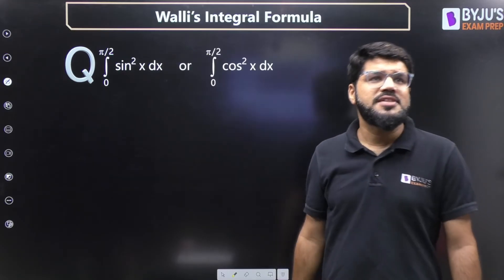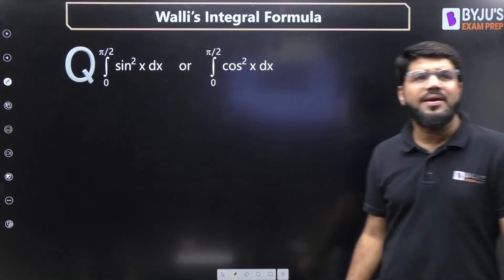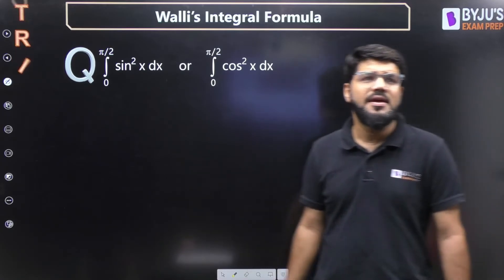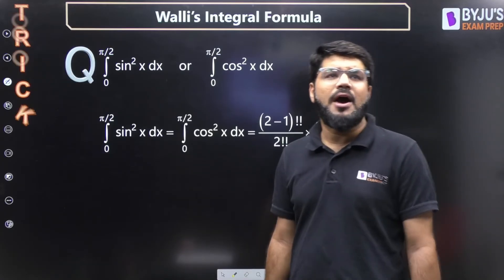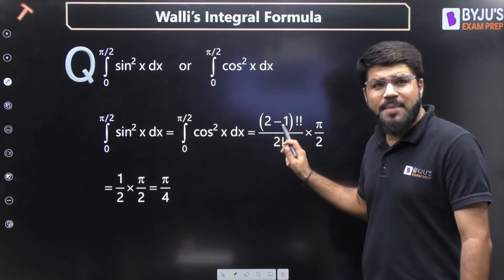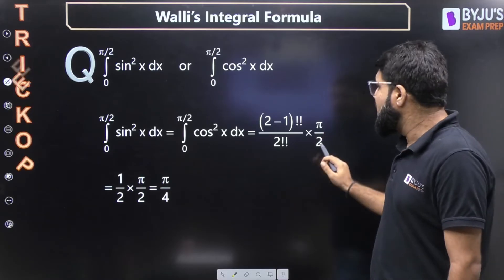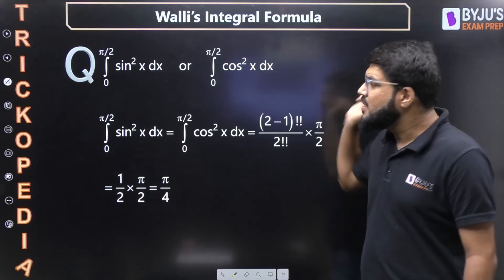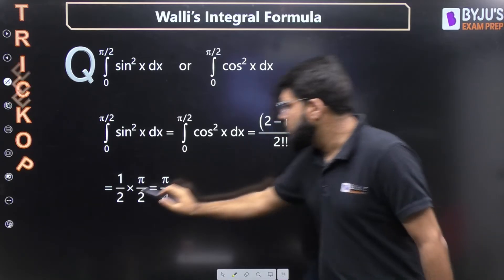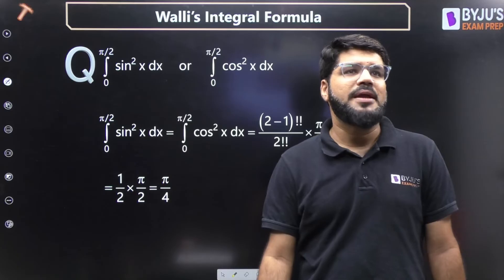For the individual case, consider the integral from 0 to π/2 of sin²(x) dx or cos²(x) dx — both give equivalent answers. The formula gives (n−1)!! / n!! × k, where k = π/2 because the power is even. So it is 1!! / 2!! × π/2 = 1/2 × π/2, and the answer is π/4.